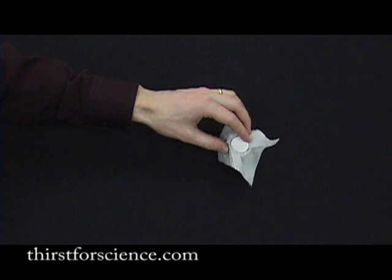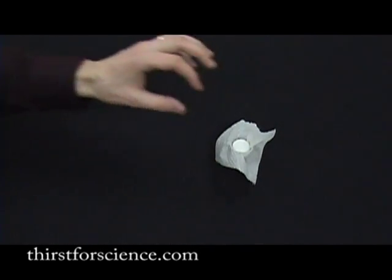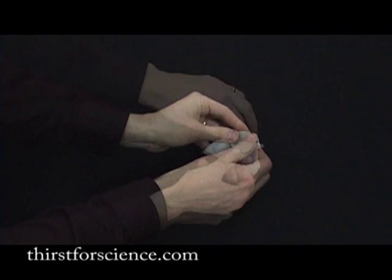Now, take your Alka-Seltzer tablet or your baking soda and place it on top of the toilet paper, and then finally, put the cover on top.